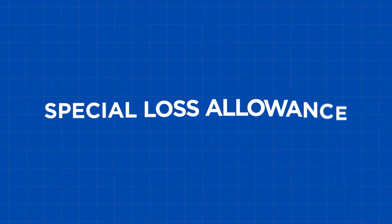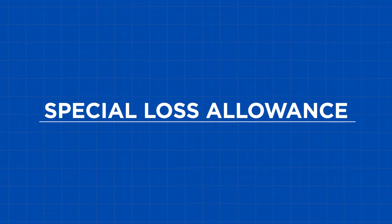All right, so the special loss allowance allows you to take up to $25,000 in rental losses against your active income, as long as your modified adjusted gross income, also known as MAGI, is $100,000 or less.